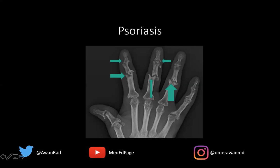The findings here are supported best by psoriatic arthropathy. Psoriasis can have a distal distribution with central erosions and marginal erosions. When we see distal distribution, one should really think about psoriatic arthropathy as a leading cause. Gout, which was also in the differential, typically results in juxta-articular erosions — just outside the joint, well-defined with sclerotic margins and overhanging edges — and that's not what we see here.